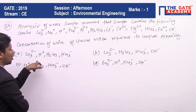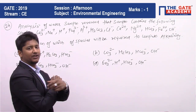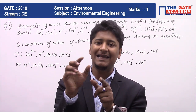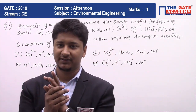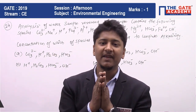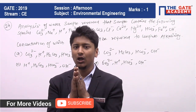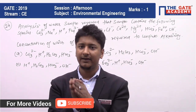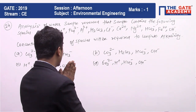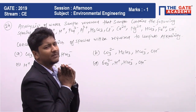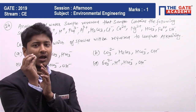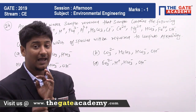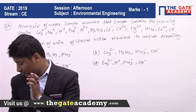H⁺ ion is present in all options other than B. As you know, H⁺ ion contributes to acidity, not alkalinity. So those options can be eliminated. But I'm still not sure about why H₂CO₃ would contribute to alkalinity, so let's examine that.